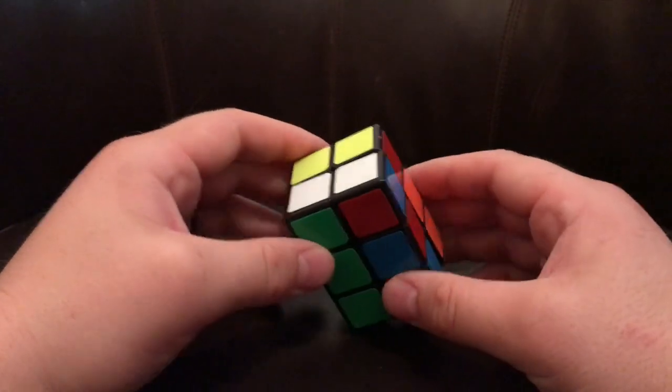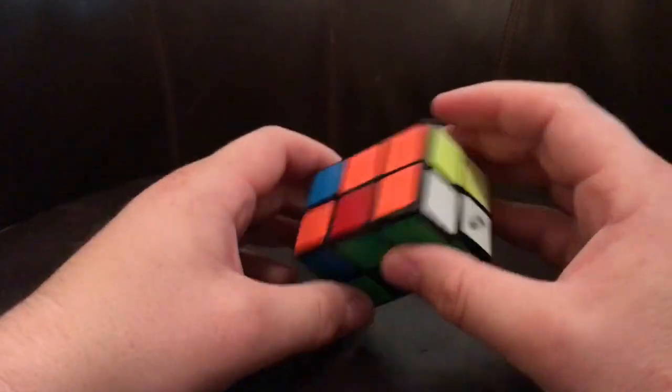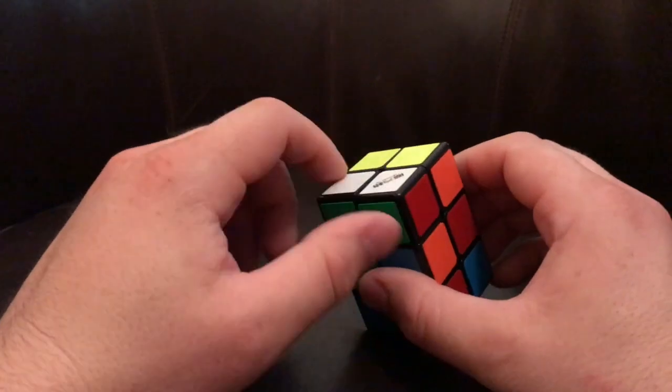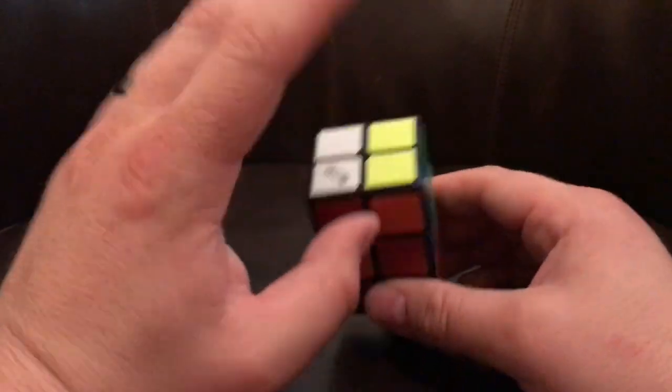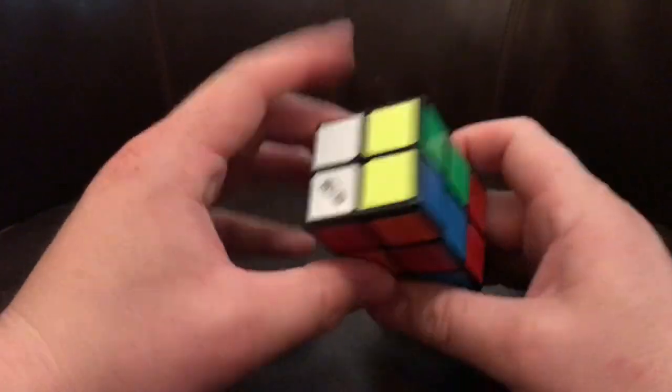So with this, it's going to be more of like playing around with it. You're going to want to obviously solve the top layers. The edges don't need to be solved. Just get all the whites on top and all the yellows on the bottom.